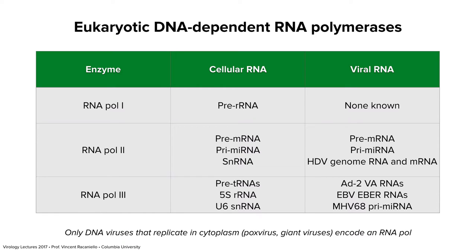Pol 1 makes ribosomal RNA, and as far as we know, this polymerase is never used for any viral template. Pol 2 is the one we'll mostly concern ourselves with today — the enzyme that makes pre-mRNA for our cells and for many viruses. It also makes primary microRNA transcripts, small nuclear RNAs, and the hepatitis delta virus genome is replicated by it. Pol 3 makes tRNAs and some ribosomal RNAs, and some viruses use pol 3 to make very small RNAs.